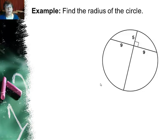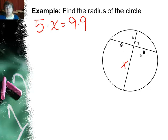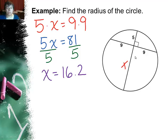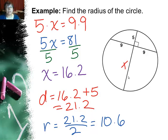In this example we want to find the radius of the circle. Using the chord-chord product theorem: 5 times x equals 9 times 9. Multiply and divide both sides by 5, and x equals 16.2. So the diameter is 5 plus 16.2, which is 21.2, and the radius is half that — 10.6. We used the chord-chord product theorem: 9 times 9 equals 5 times x, solved for x, and from the whole diameter found the radius.